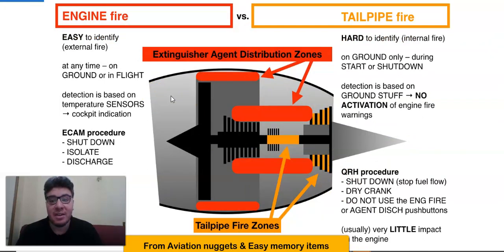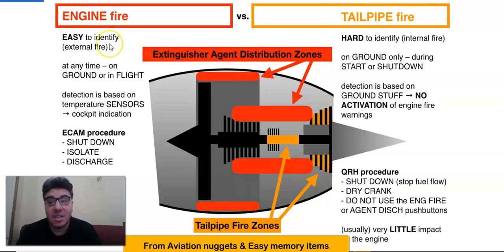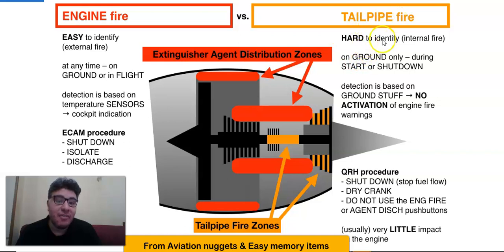Again, thank you Tino for this good schematic showing the difference between engine fire and tailpipe fire. Engine fire is easy to identify because all cockpit warnings will give you an alarm — in Airbus, a continuous repetitive chime, master warning, and cockpit indications. The tailpipe fire is coming from the core of the engine and is hard to identify because it is an internal fire and no detectors will give you any indication for a tailpipe fire.